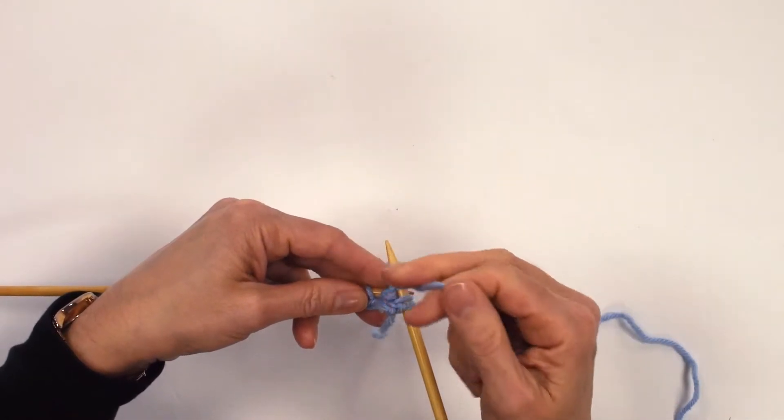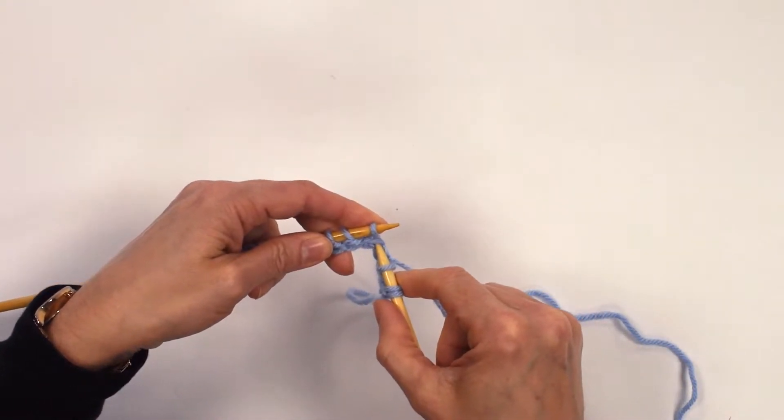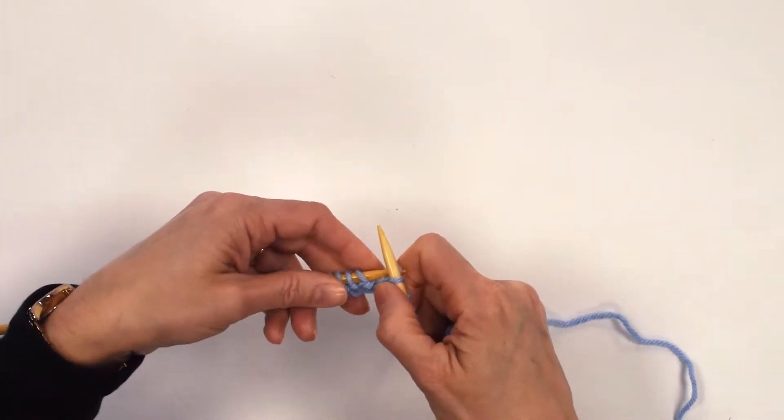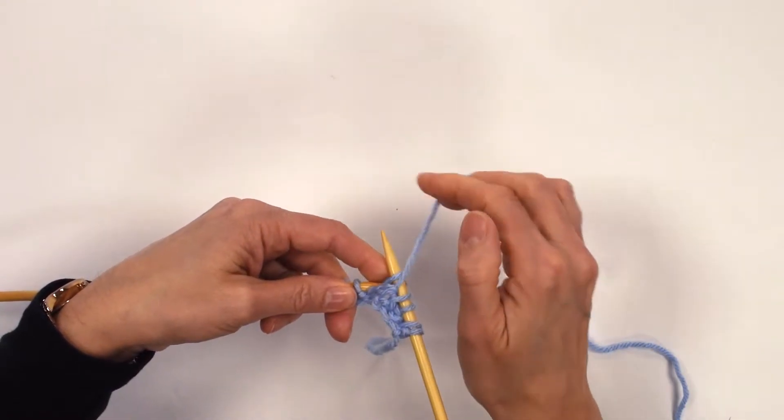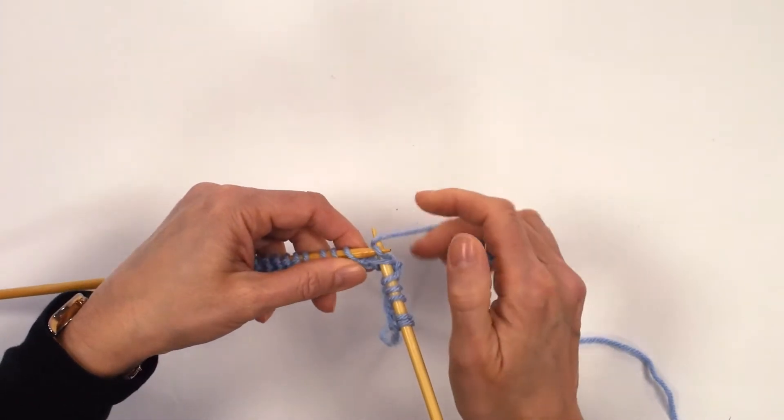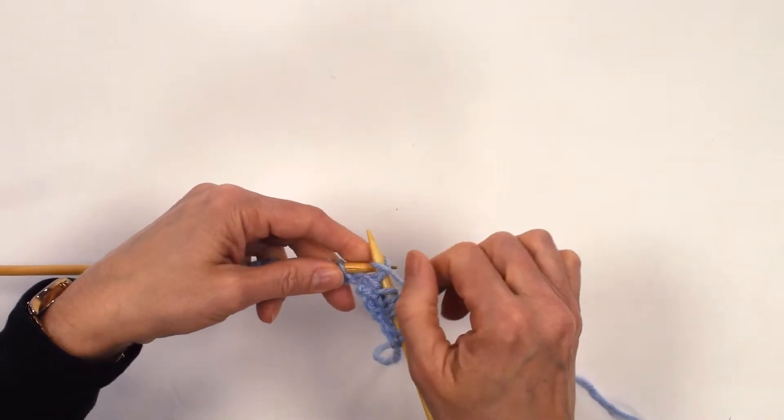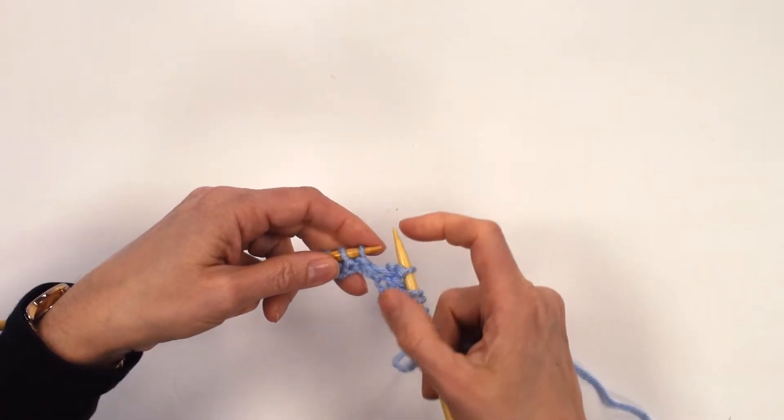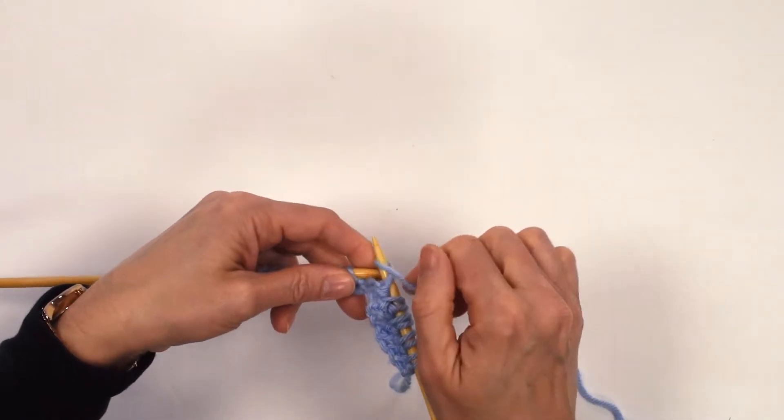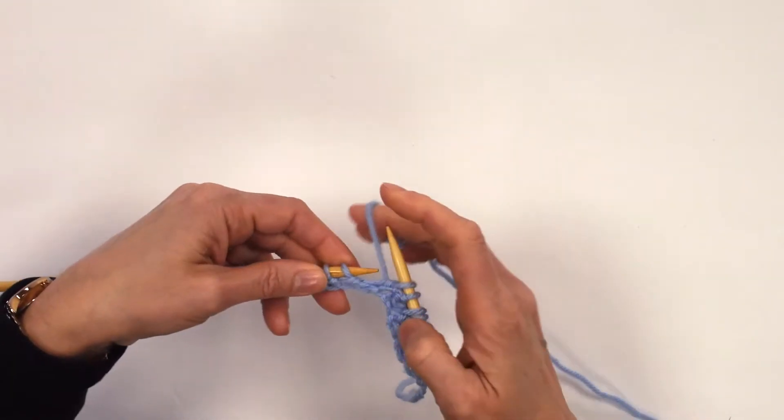The next stitch is a purl one, so just a normal purl. Then we're going to K1B again. So I'm going into this stitch here. And next is a purl. So going into the one below again. So it's alternating a K1B with a purl stitch. So K1B, purl, and we're going to work this all the way across the row.